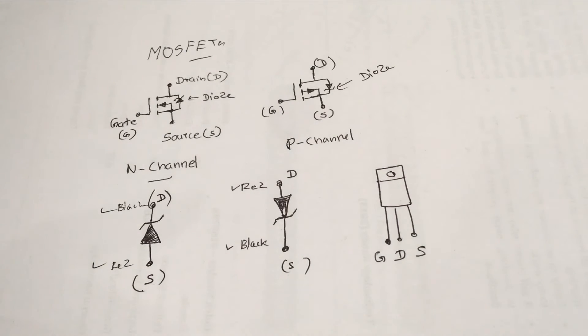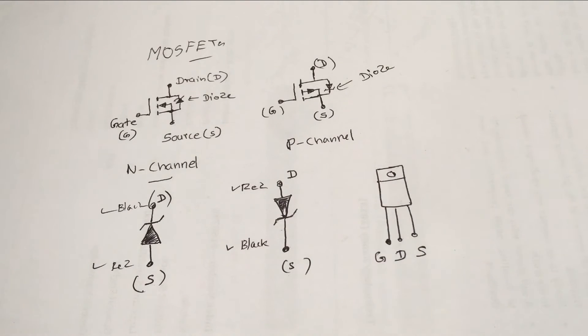But just checking these two pins does not reflect the real situation of the MOSFET. Therefore, you have to check the gate pin as well. Shall we check this using a real MOSFET?